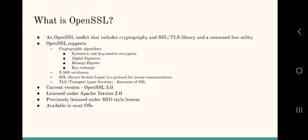All of this support is what OpenSSL provides for applications. Its current version is OpenSSL version 3, which is licensed under Apache version 2. Previously it was licensed under a BSD-style license, and it's available in most operating systems.